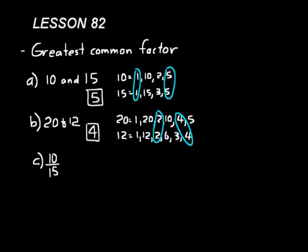For example, let's look at practice problem C: ten-fifteenths. We already found in practice problem A that the greatest common factor for 10 and 15 was 5. So we divide both by 5 — that's five over five, which is the same as dividing by one. Ten divided by 5 equals 2, and fifteen divided by 5 equals 3. So two-thirds is an equivalent fraction to ten-fifteenths — it's the most reduced form, with the smallest possible numerator and denominator values.